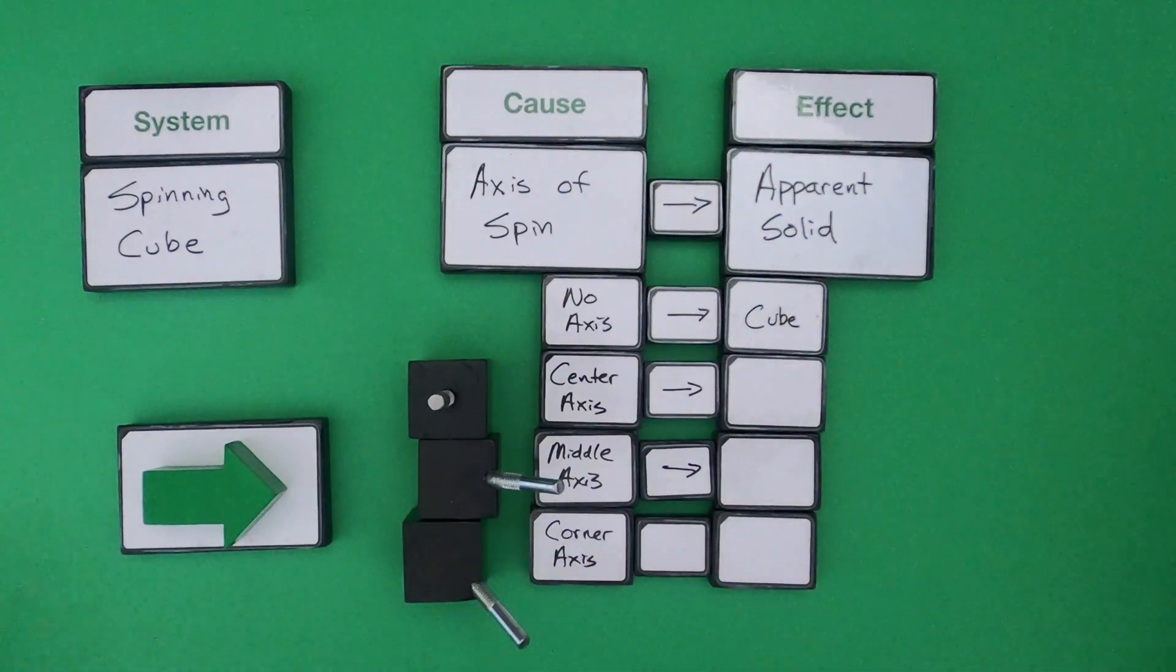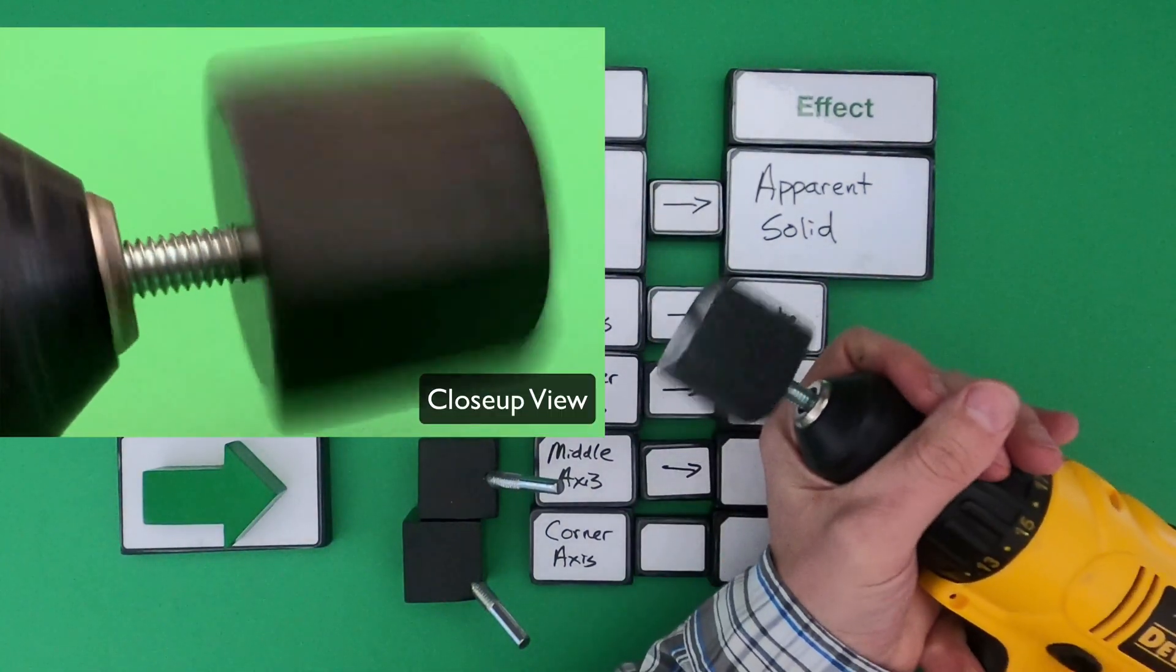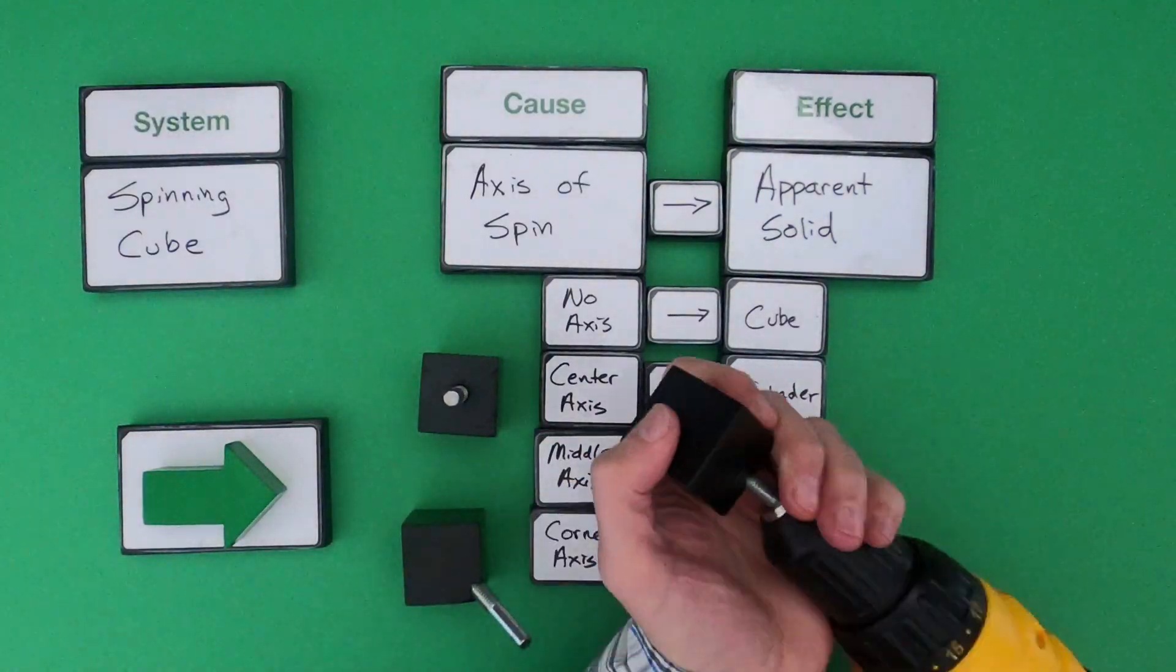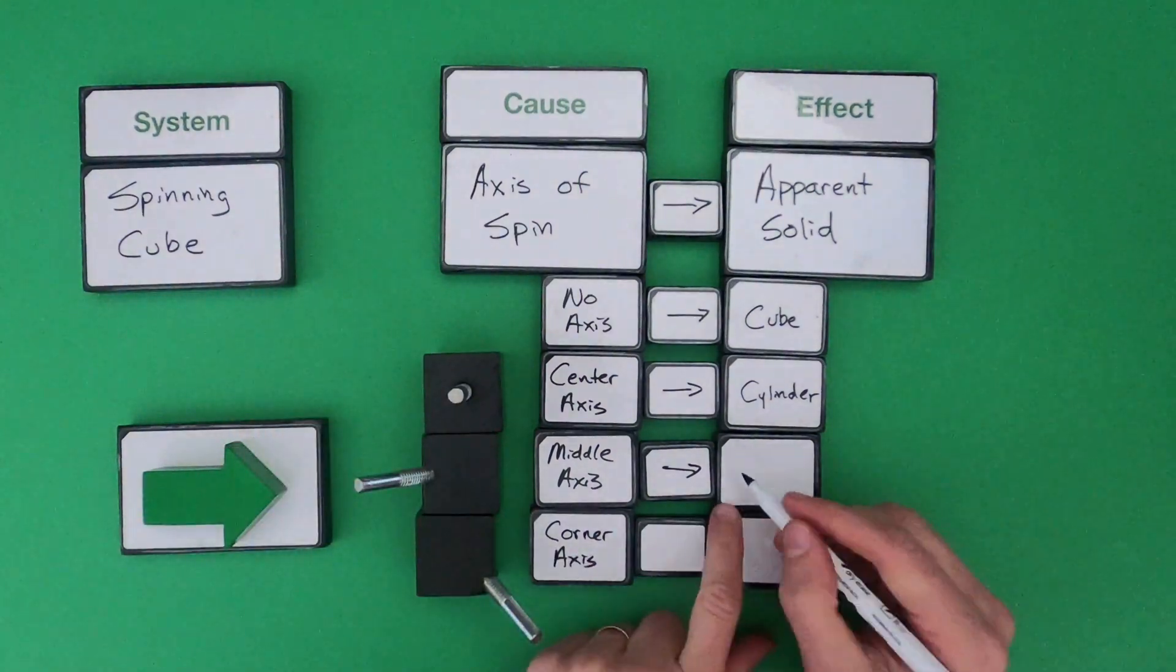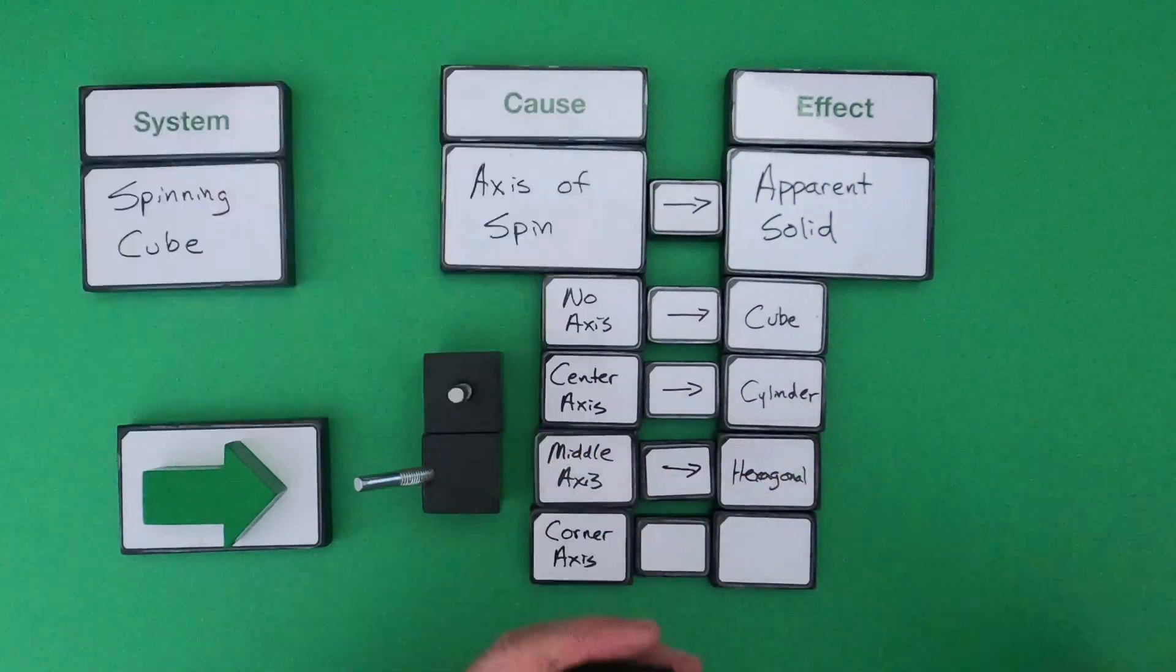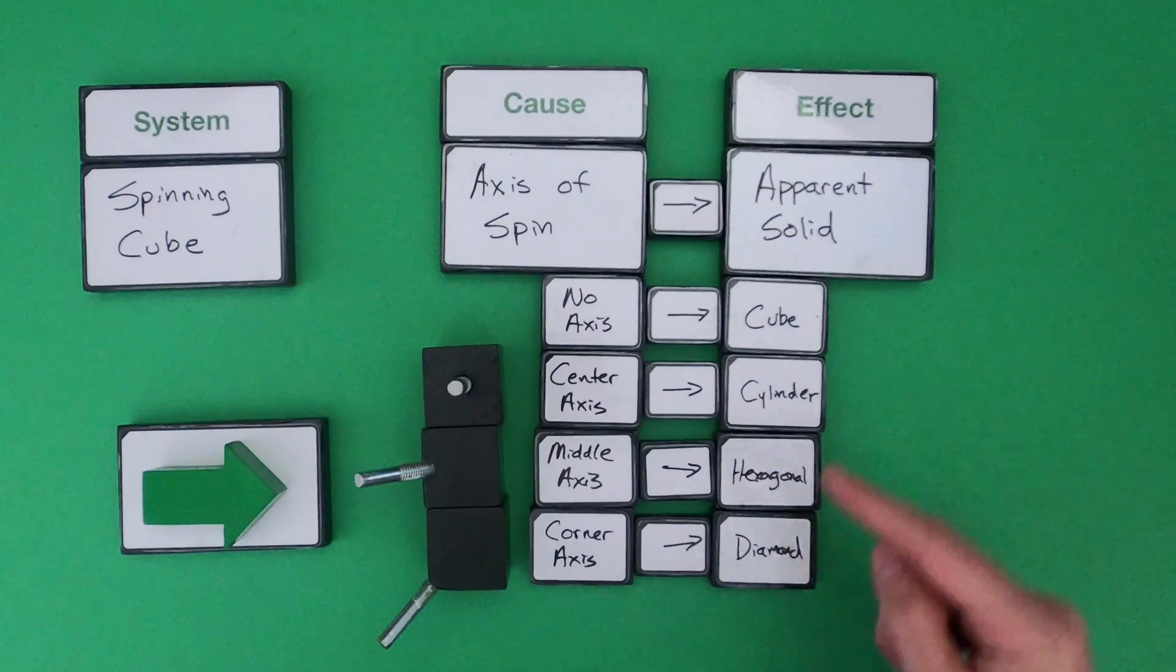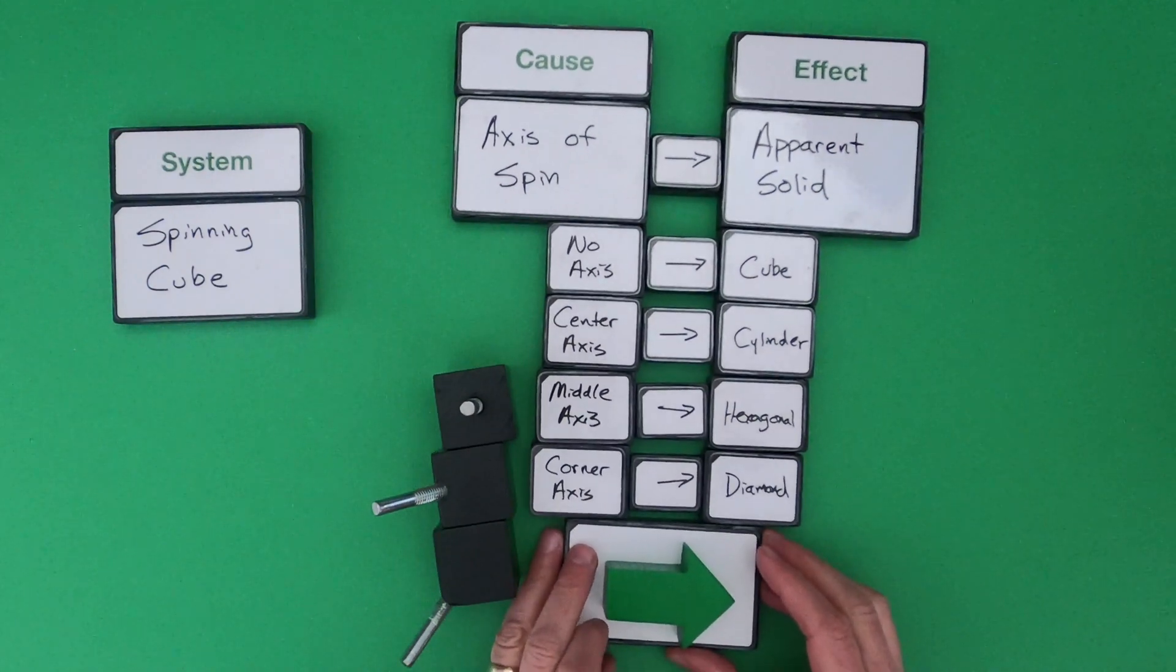Let me hook these up to a drill so we can speed it up, and then let me fill out the rest of this cause and effect. Now what I've shown is all the different possibilities we can get from different axes of spin. You can see that we're getting a bunch of different solids. So instead of me just saying if you change the spin we get different solids, I'm really digging into what is that causal relationship between these.